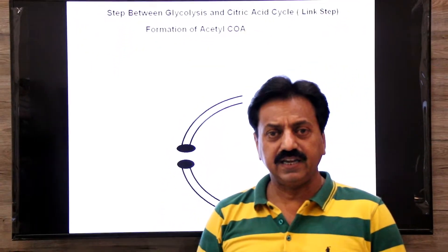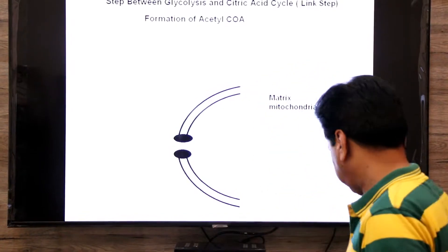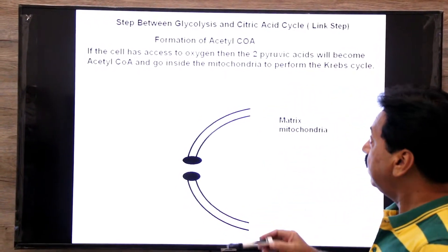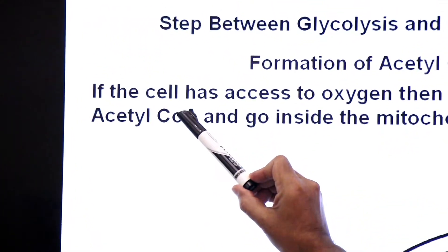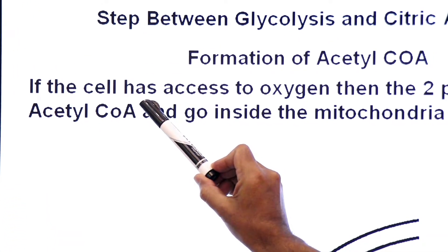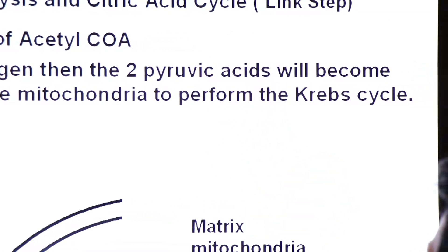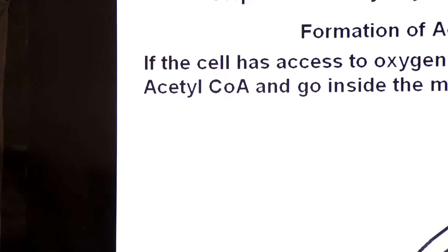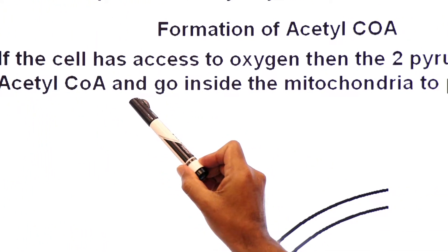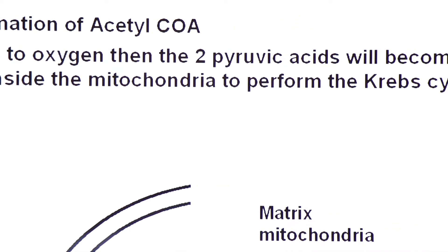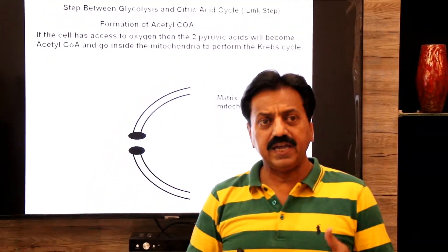Today we will discuss the formation of acetyl coenzyme A. When oxygen is available, the two pyruvate acids become acetyl coenzyme A and go inside the mitochondria to perform the Krebs cycle. The two molecules of pyruvate enter into the mitochondria matrix.